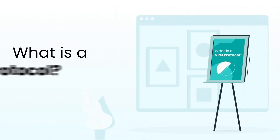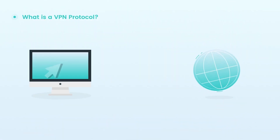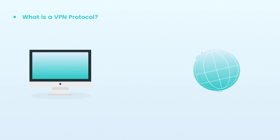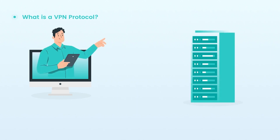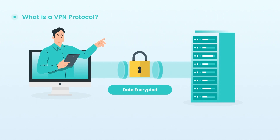What is a VPN protocol? Simply put, a protocol defines how your devices communicate with each other. A VPN protocol, on the other hand, is a set of rules used to negotiate and establish a secure connection between a user's device and a VPN server. You can think of the VPN protocol as a secure tunnel to encrypt data while surfing the web.